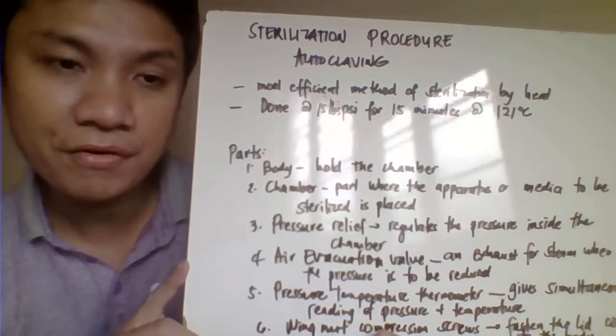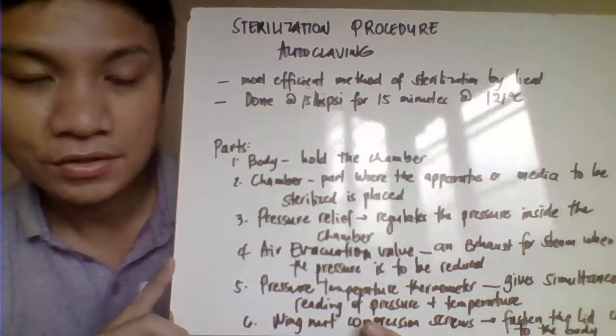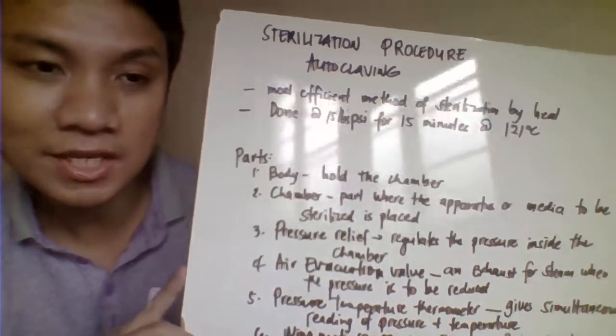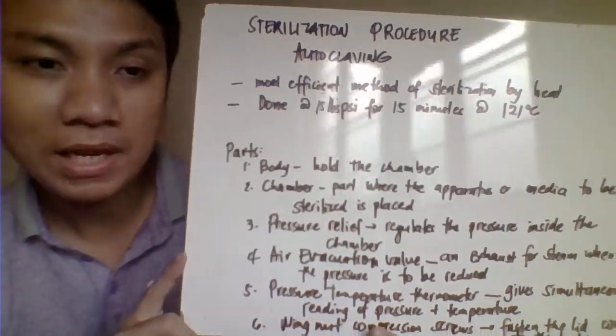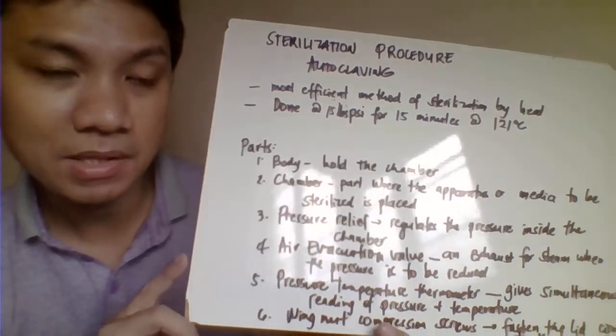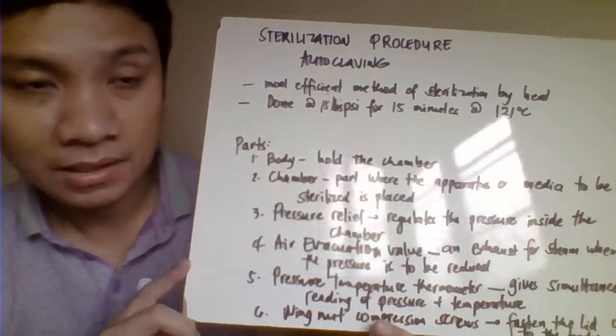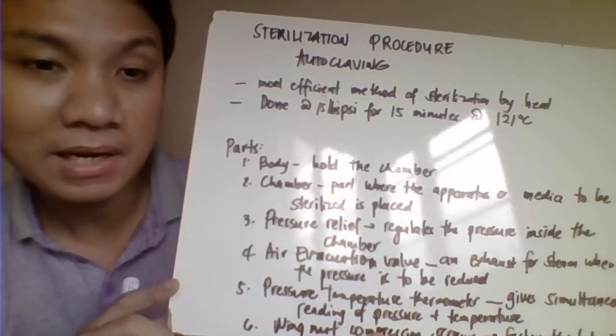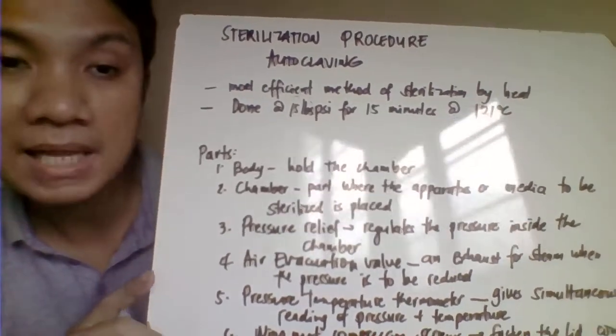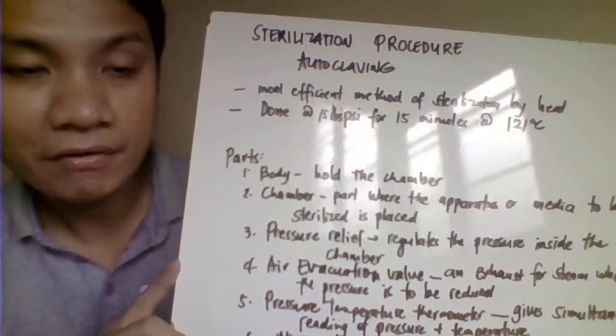Okay, so we have here the procedure for autoclaving. Autoclaving is one of the sterilization techniques that allows us to sterilize the materials that we use when we are culturing bacteria. We can also sterilize glassware or even melted agar in order for that to not be contaminated with other organisms.